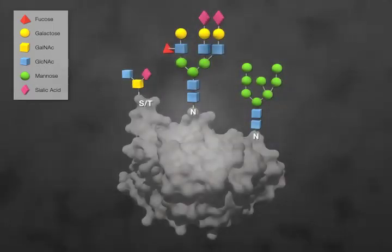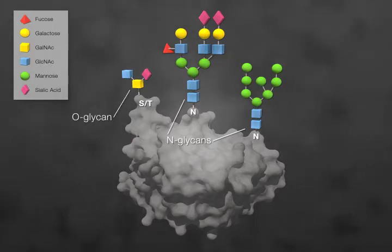Proteins can be modified with different kinds of carbohydrates, N-glycans and O-glycans being the most common types in eukaryotic systems.